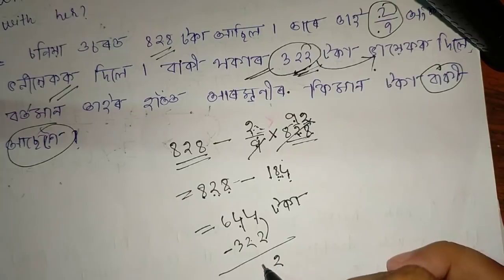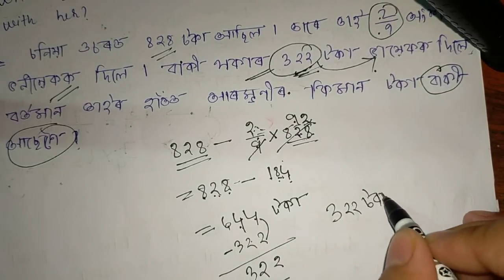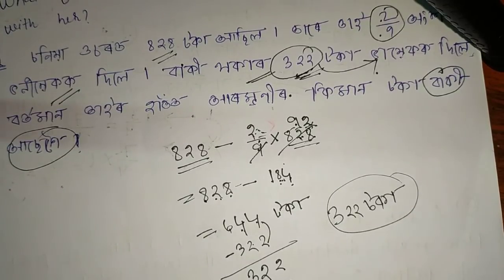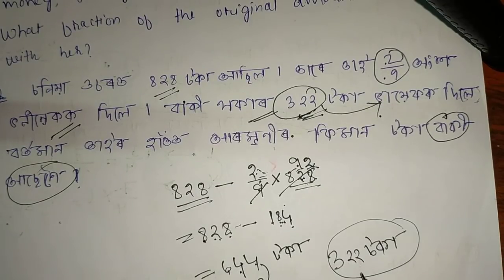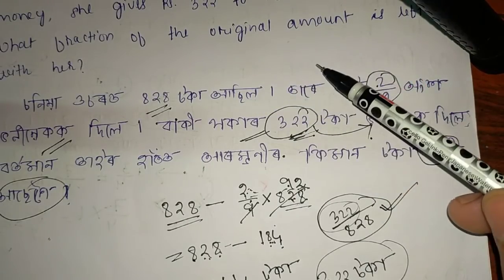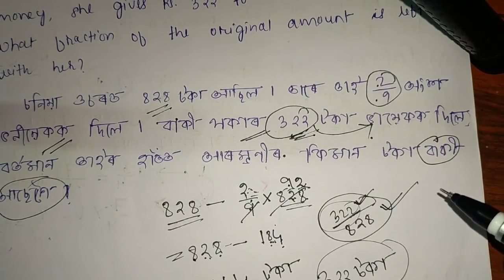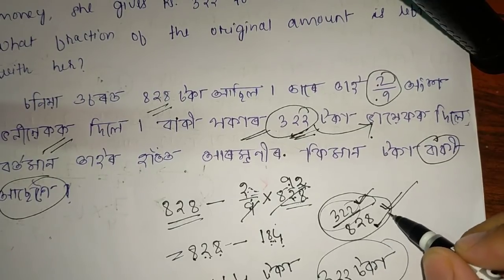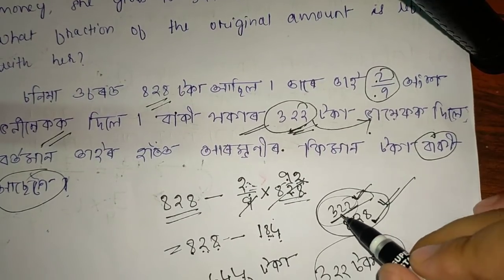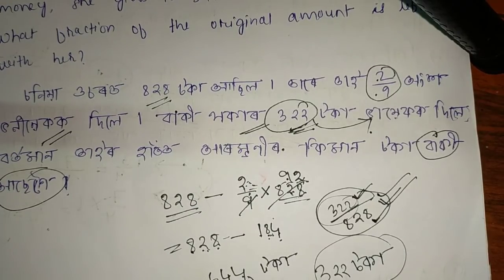So 322 rupees remain. The question asks what fraction of the original amount she is left with. So we write 322 over 828 and simplify. We divide to get the lowest fraction. So the answer is the simplified fraction of 322/828. If the concept is not clear, please leave a comment.